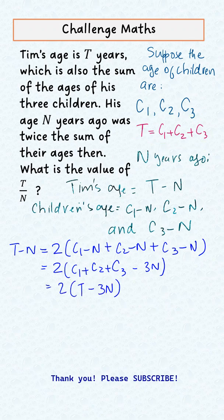So then we can write that equals 2 times T minus 3N, and that equals 2T minus 6N. So if you collect the like terms to one side, T minus 2T would be equal to minus 6N plus N, and then we get T equals 5N.